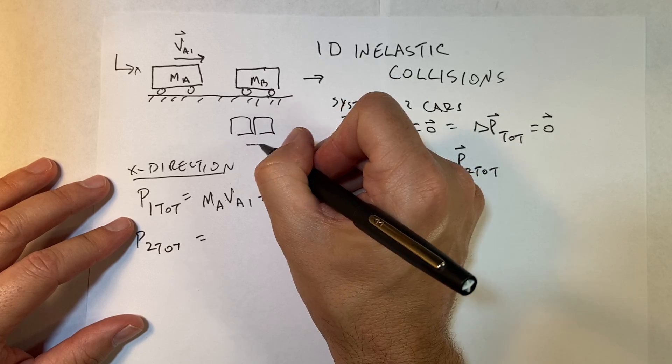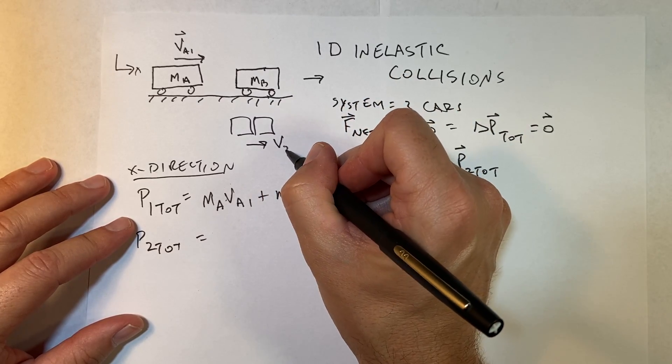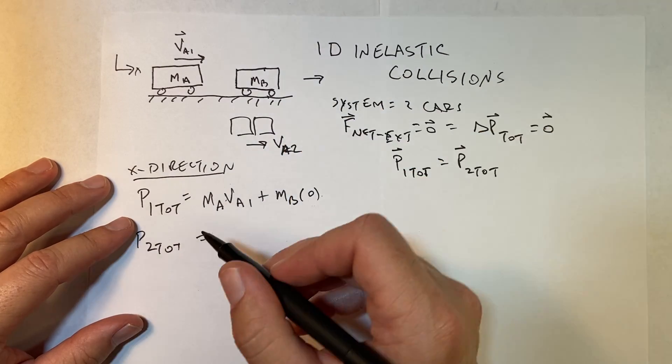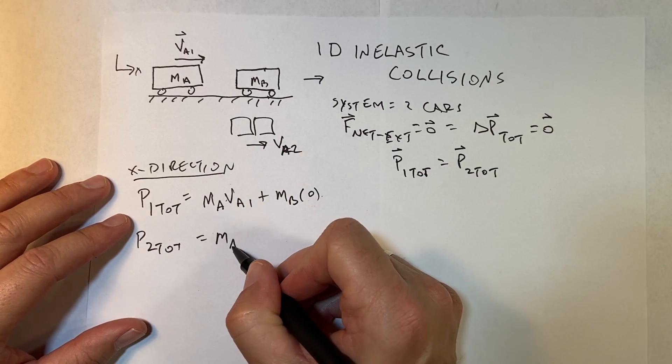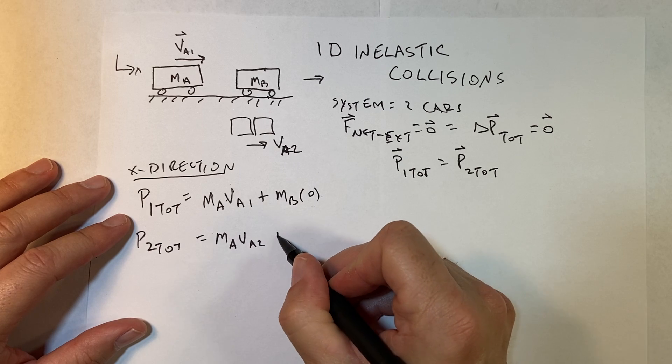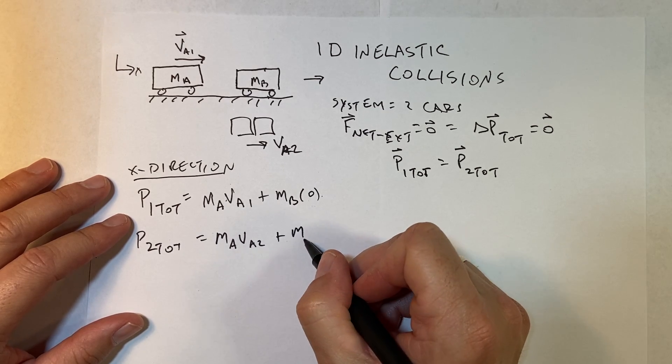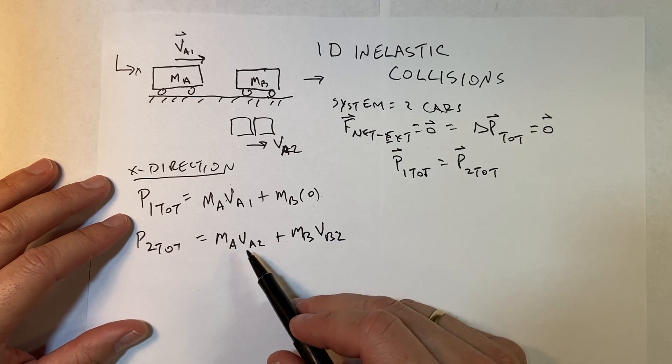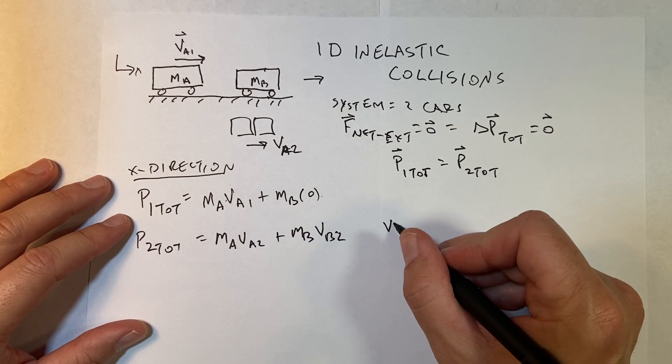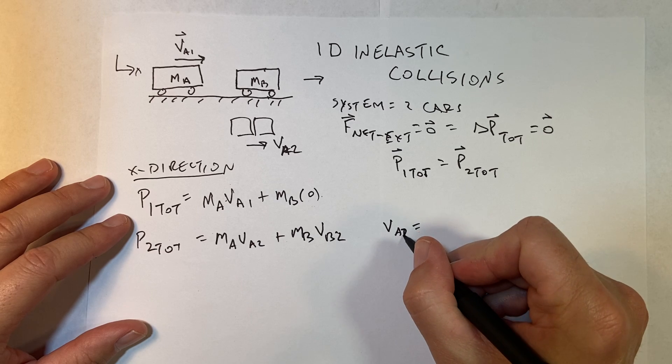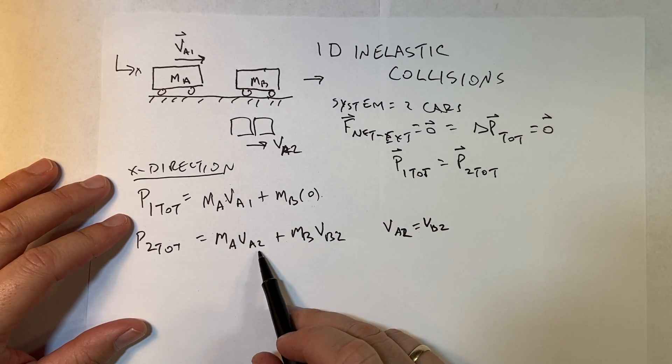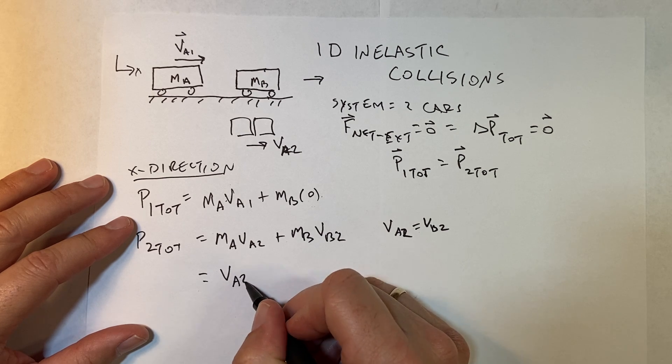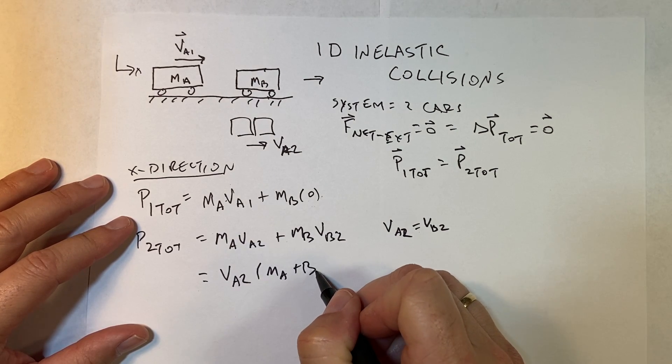And then P2 total afterwards, they're going to be stuck together with some new velocity. I'll call that, let's say they're stuck together and let's say it moves with the velocity v2. Well I could call it v_A2 because v_B2 is the same thing. It's going to be m_A v_A2 plus m_B v_B2, and that's that. But these two are stuck together so v_A2 equals v_B2. So I'm just going to put this as v_A2, so this is going to be v_A2 times m_A plus m_B.